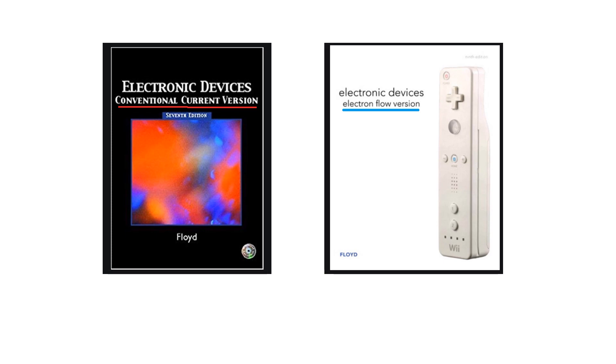The confusion prevailed because many books were written using conventional current methods from day one. But later on, when electronic current flow was known to be the correct method, some authors also wrote books on that basis. For example, this book is from Floyd — 'Electronic Devices' — and it states it is following the conventional current version. The same author has written another book, also called 'Electronic Devices,' but in that case he has written the electronic flow version.